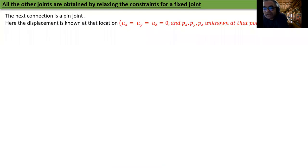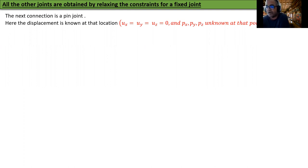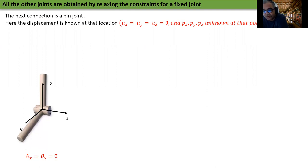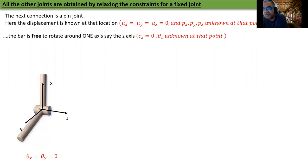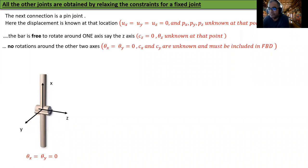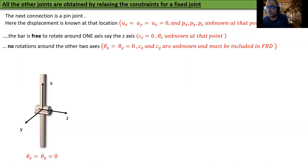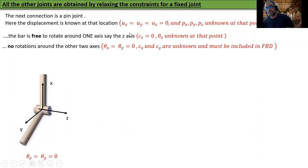Starting with everything fixed, we slowly relax one constraint at a time to get different kinds of joints. The next connection is a pin joint: displacements ux, uy, uz are zero, so forces Px, Py, Pz are unknown and should be specified as unknown concentrated loads in the free body diagram. The bar is free to rotate around one axis — say the z-axis — so cz = 0 and θz is unknown. No rotations around the other two axes means θx = θy = 0, so Cx and Cy are unknown and must be included in the free body diagram. cz = 0 will not be included because zero causes need not be specified.